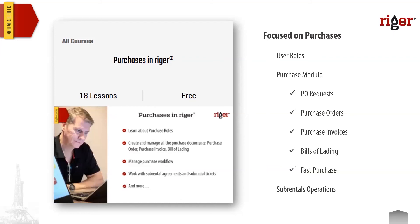Next is the Purchases in RIGOR course, which covers everything connected to any kind of purchase you can make in the RIGOR platform. We explore the user roles concept and what purchase roles we have in RIGOR, then introduce all the documents that are part of the purchase module: PO requests, purchase orders, purchase invoices, bills of lading that bring inventory to your balances, and a couple of automation tools such as the best purchase feature that saves time by letting you do everything from within one window.